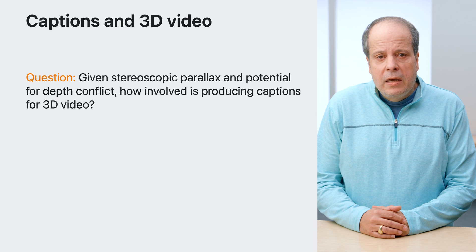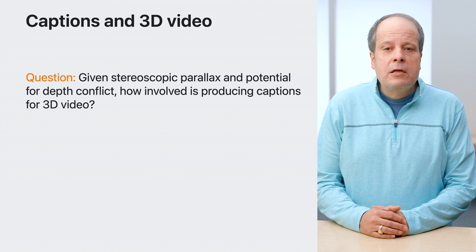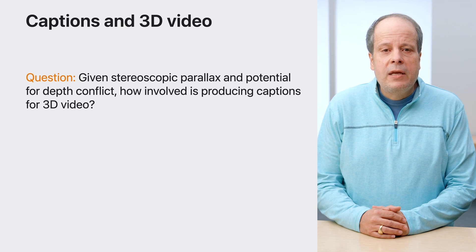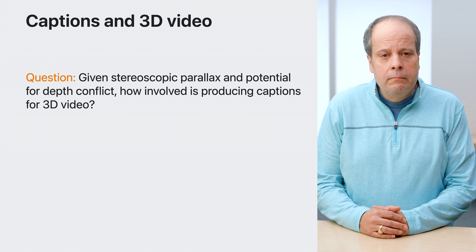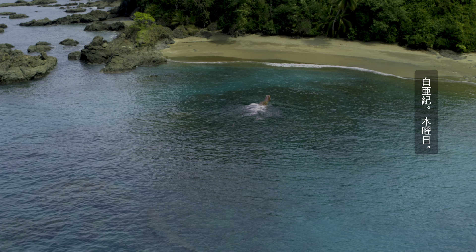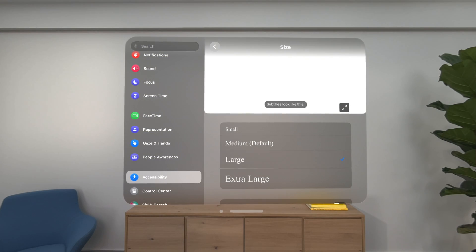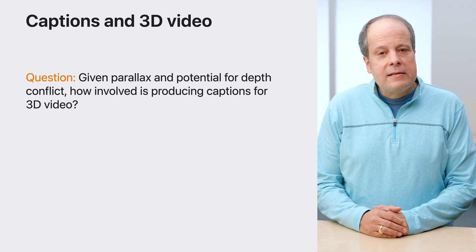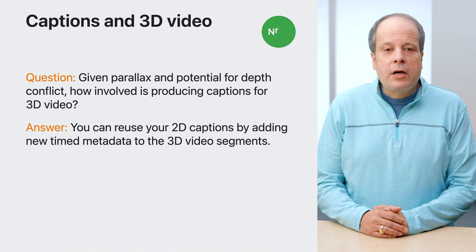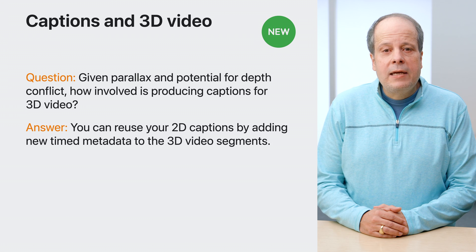Given stereoscopic parallax and the potential for depth conflict, how involved is producing captions for 3D video? Can we support playback for horizontal captions, playback across languages including vertical captions, and playback when accessibility settings are used to adjust the user's preferred caption sizing? The answer is yes. With stereoscopic video using the approach described next, captions should just work as-is, while also allowing the same 2D caption assets to be shared between 2D and 3D experiences.